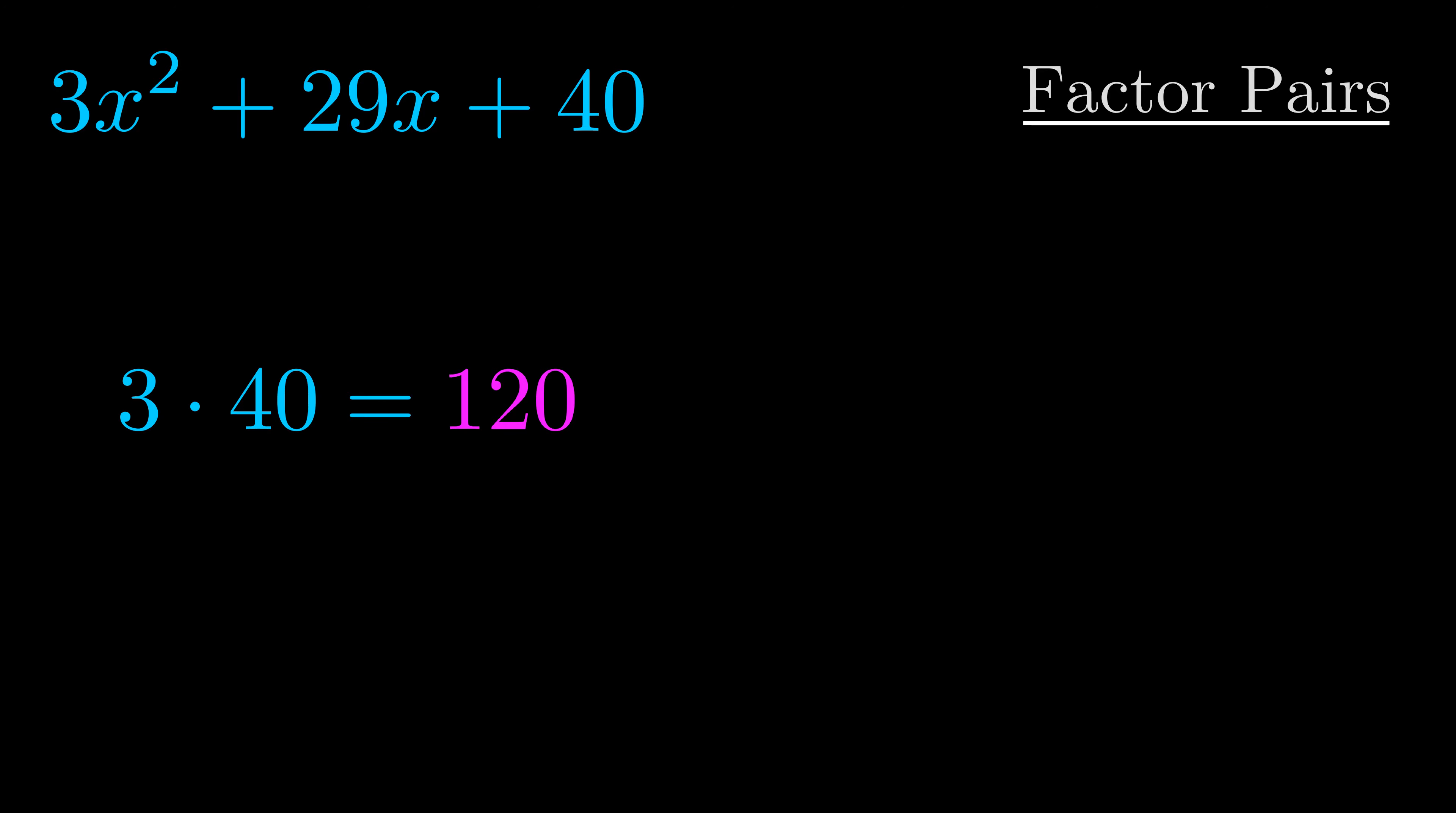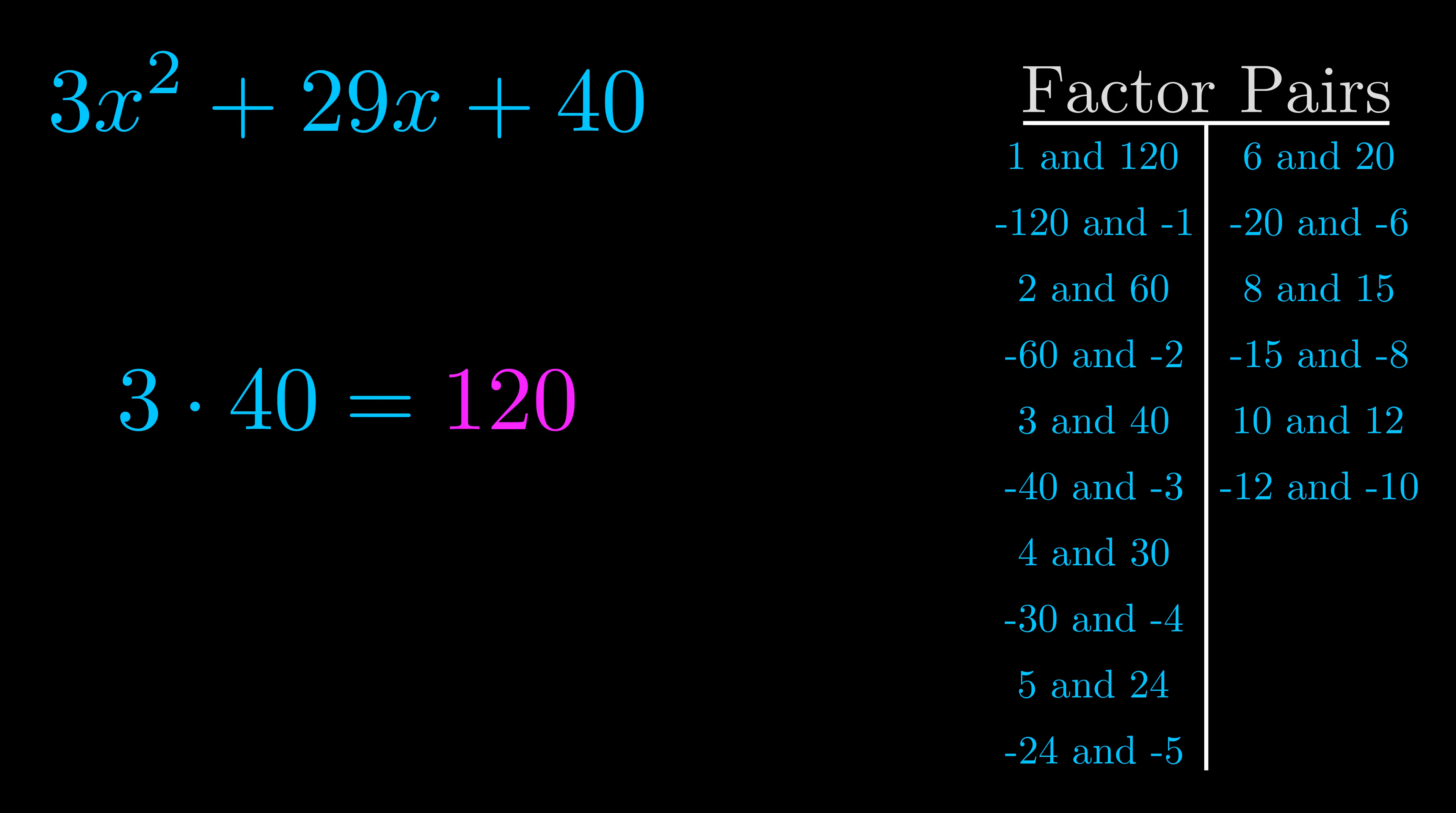Okay here's what I came up with. Now once you have these factor pairs the goal is to find which of these pairs adds to the b value.